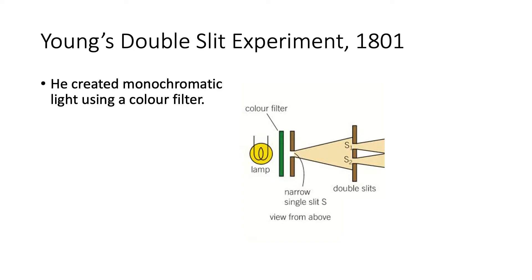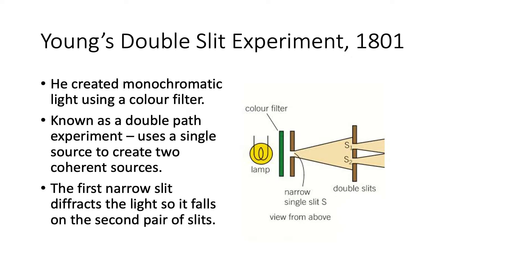He shone that through a narrow slit, and then that light in turn shone on double slits, which then created the interference pattern. It's known as a double path experiment because he needed to use a single slit to create the light to shine through the double slits.